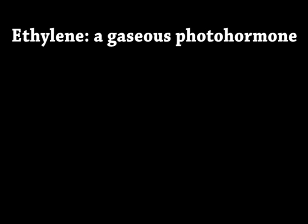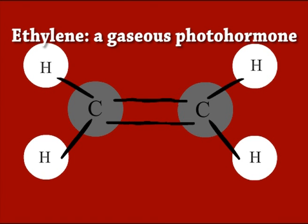Ethylene is a gaseous photohormone which is produced within climacteric fruits such as tomatoes, figs, bananas, apples, and pears.